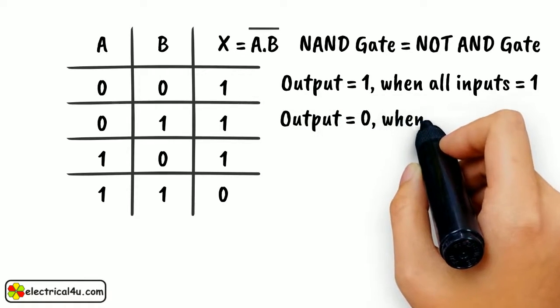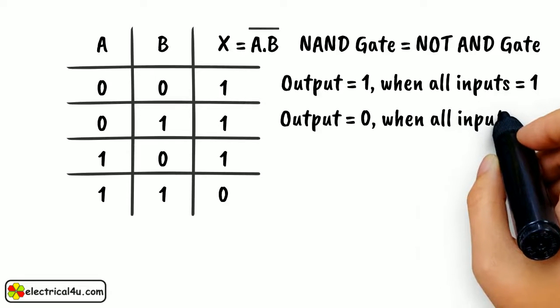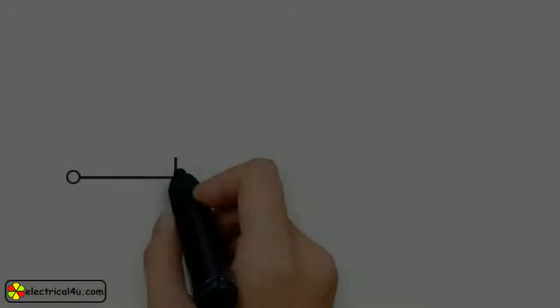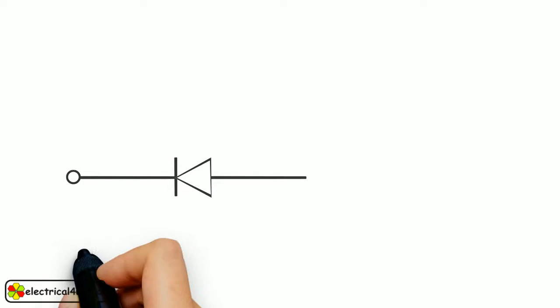The output is only low or 0 when and only when all inputs of the gate are 1. Now we will try to realize a NAND gate using diode and transistor.